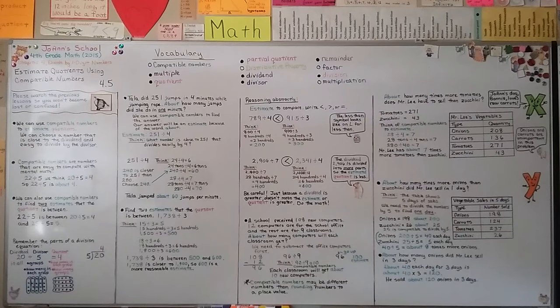Remember that compatible numbers are not the same as rounding a number to a place value, and they can help us estimate quotients.